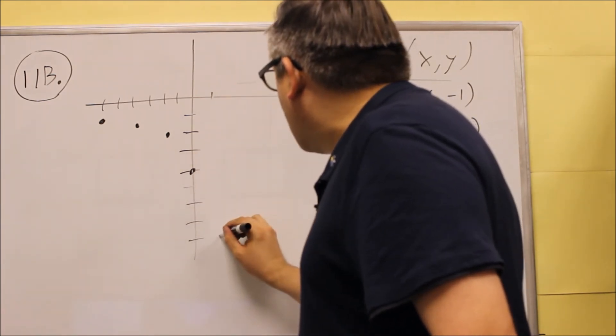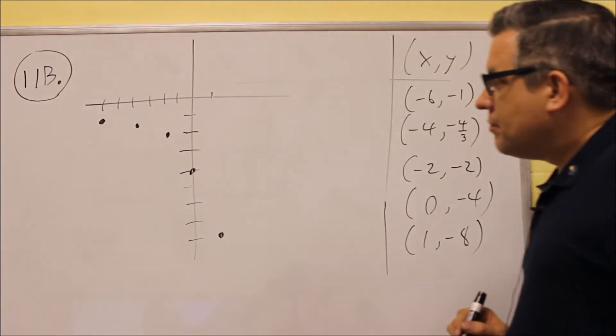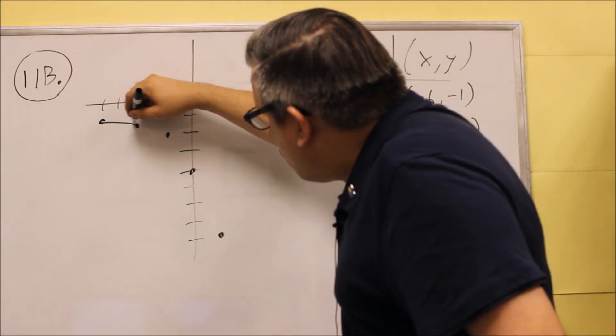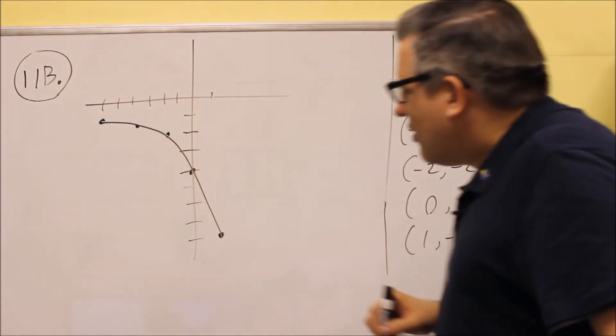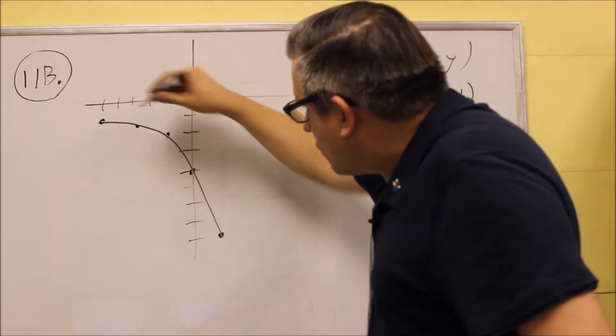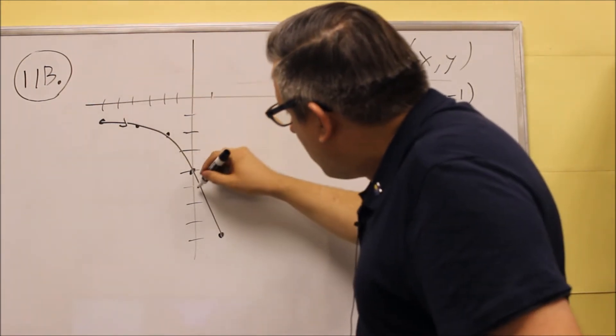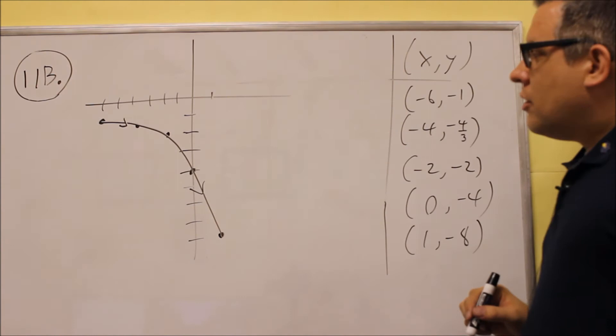So 1, negative 8 will be here. And so we have a line that runs like this. And we have our, it's moving this direction so we put our arrows, arrowheads on it.